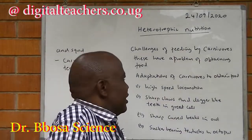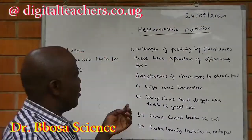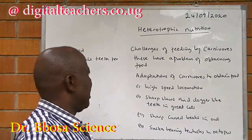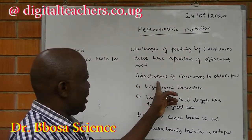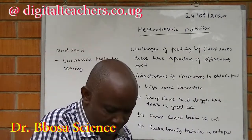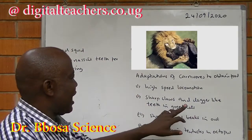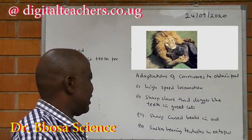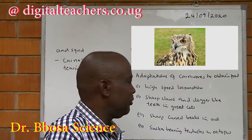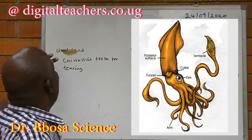The main challenge of carnivores is obtaining food, because they have to chase animals or fight with them to get food. Adaptations of carnivores to obtain food include high-speed locomotion in lions, sharp claws and dagger-like teeth in great cats, sharp curved beaks in owls, and circle-bearing tentacles in octopus and squid.